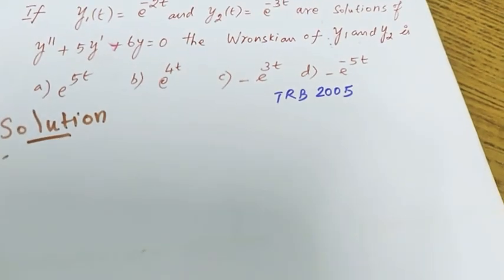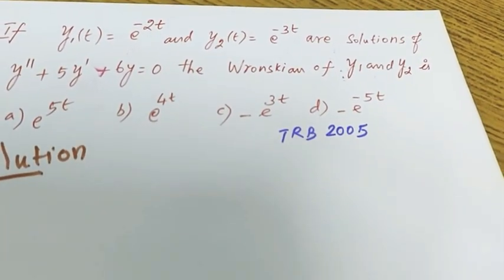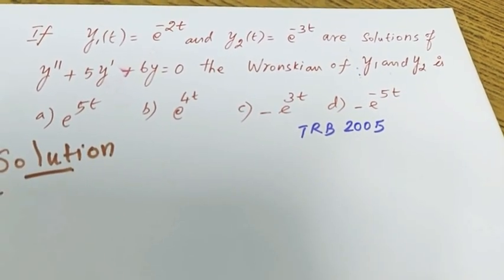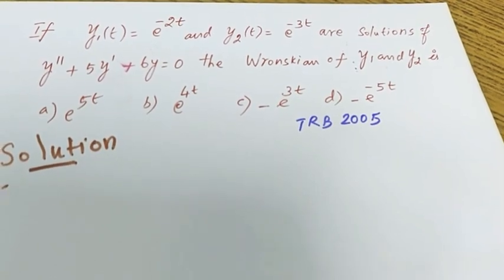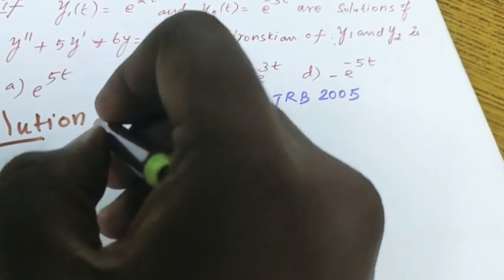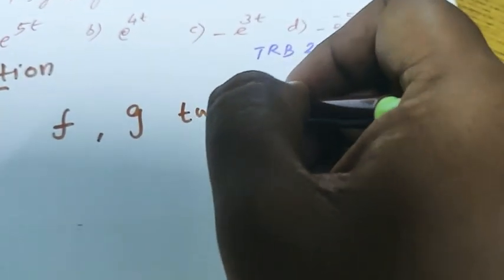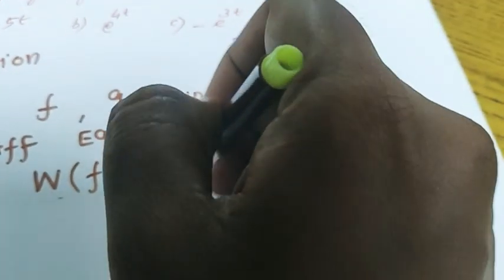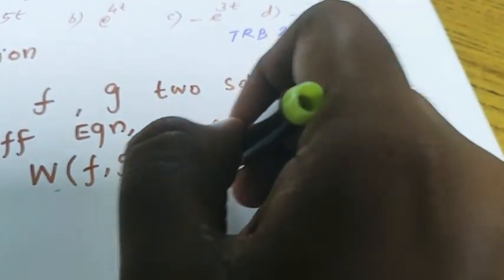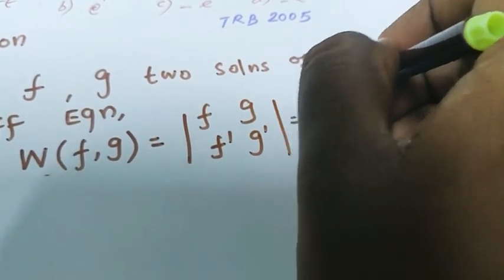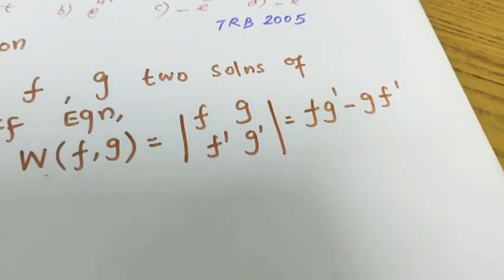The Wronskian is a tool to determine whether a set of solutions or set of vectors is linearly independent or linearly dependent. Definition: given F and G, two functions or two solutions of a differential equation, the Wronskian of F and G is defined by the determinant: F, G in the first row and F', G' in the second row — that is F·G' minus G·F'.